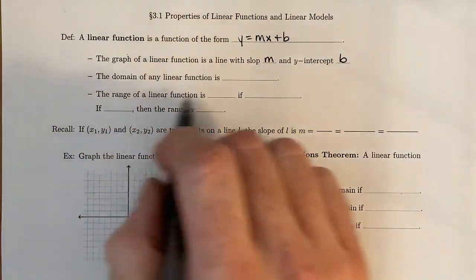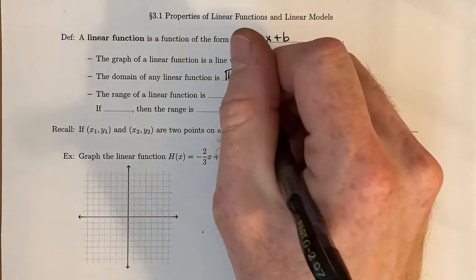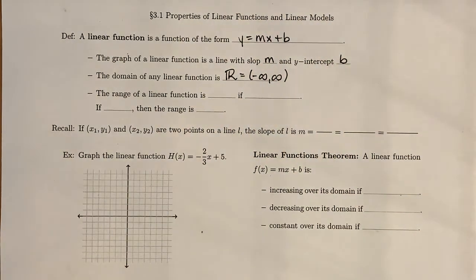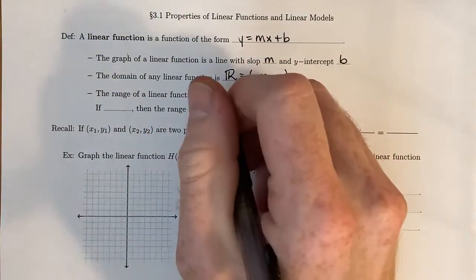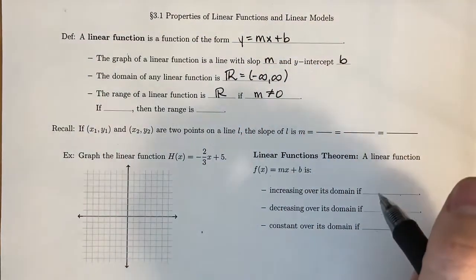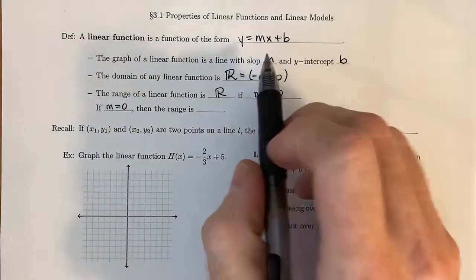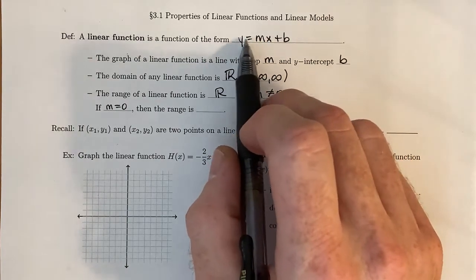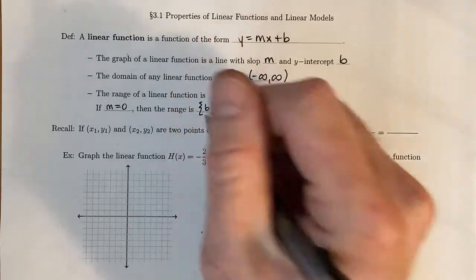The reason why it's called a linear function is because the graph is a line with slope m and y-intercept b. The domain of any linear function is all real numbers, so in set builder notation, or in interval notation from negative infinity to positive infinity. Now, the range of a linear function is all real numbers if the slope is not equal to 0. But if the slope is equal to 0, then this x term goes away, and you end up with a constant function y equals b. So the range is just the singular number b.